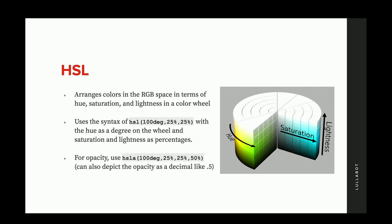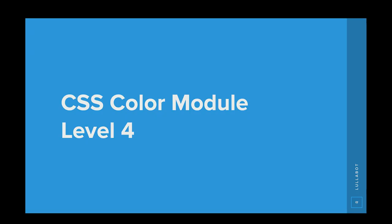Next is HSL. This one feels more intuitive than RGB because with RGB, you don't know what values of red, green, and blue you need to make the color you want. With HSL — which stands for hue, saturation, and lightness — you can follow the color wheel and see where the color is, then adjust saturation and lightness. The hue is a degree from 0 to 360, and saturation and lightness are both values from 0 to 100%. Similar to RGB, you can use HSLA to define opacity. This changes with Color Module 4.